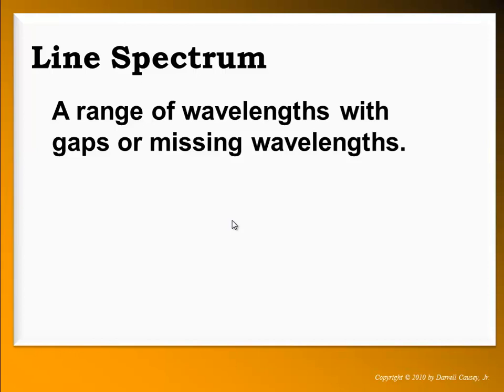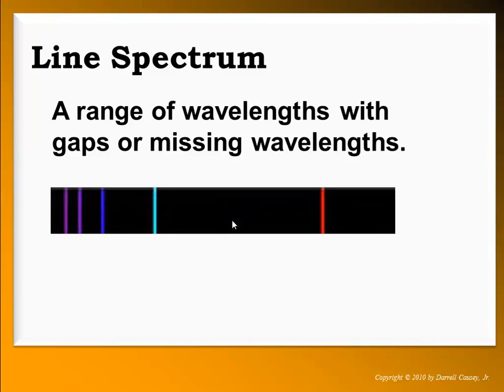A line spectrum is an emission spectrum that consists of just lines. This will be very important later when we talk about light as a particle and the work done by Robert Bunsen and Gustav Kirchhoff.